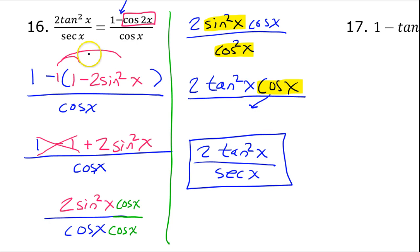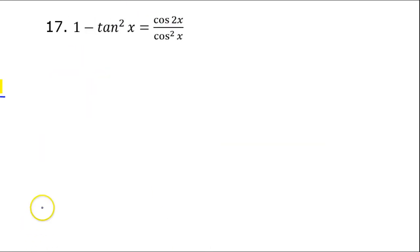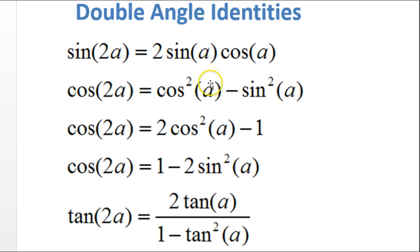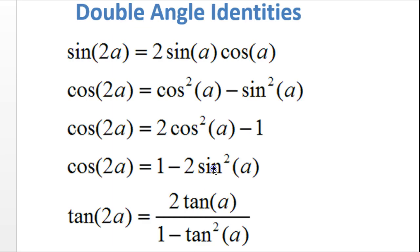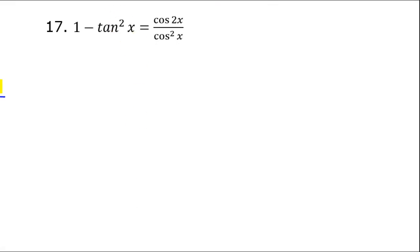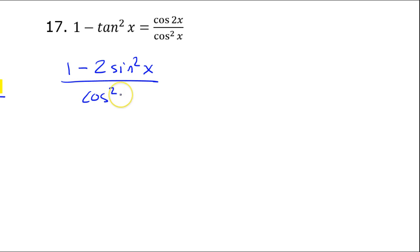Number 17: I see cosine 2x on the right-hand side, so that's the side I'll work on. Since cosine 2x has three versions, I have to carefully pick which one to try. Looking at the left-hand side, I see tangent — and tangent is sine over cosine — so I'm going to pick the version that has sine in it: 1 minus 2 sine squared x. The right-hand side becomes 1 minus 2 sine squared x, all over cosine squared x.